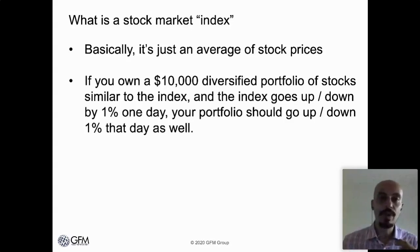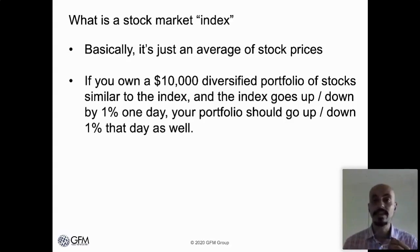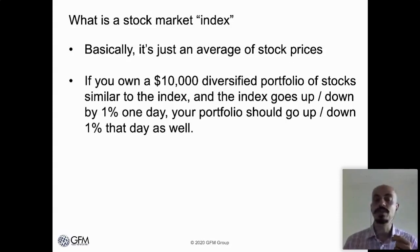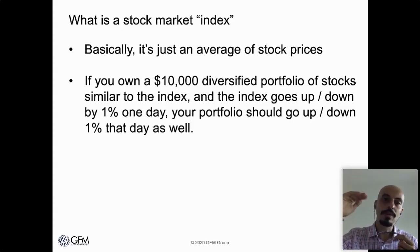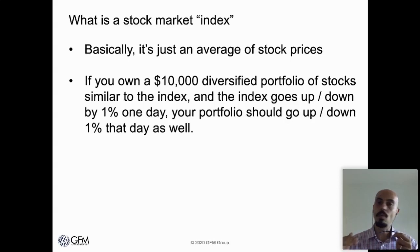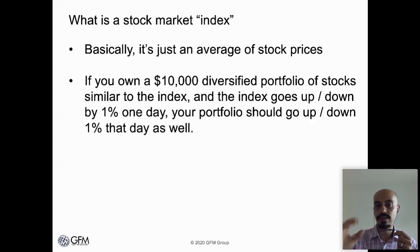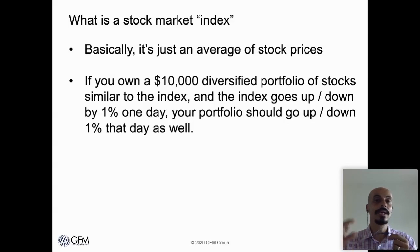In other words, if you own a $10,000 diversified portfolio of stocks similar to the index, and the index goes up or down by 1% in one day, then your portfolio should go up or down by 1% that day as well. So if the Dow was down 1%, you would probably expect your portfolio to be down by about $100 over that one-day period. That's just counting price movements — not dividends or any other way you as an investor can make a return. It's just a quick shortcut to say, in general, is the market up or down?